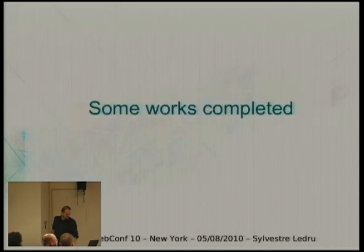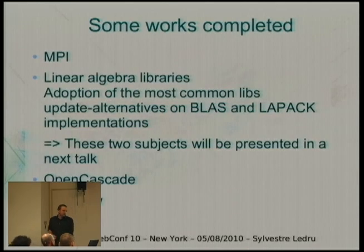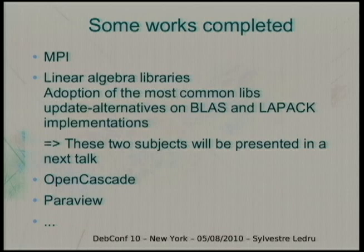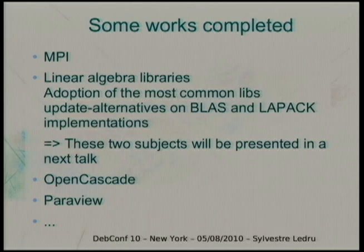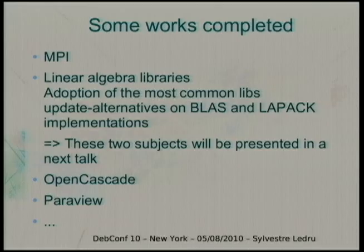I'll quickly talk about a few pieces of work we've done in the science team. One of the first is work on MPI. I won't go into detail because Adam will cover that later. MPI is basically a standard norm and many vendors implement it. In Debian, we had a lack of coordination around the various MPI implementations, so we started to address this. It's not over as we have some migration to do, but it's going well. Linear algebra is much the same — various implementations, lack of coordination, and work on that.